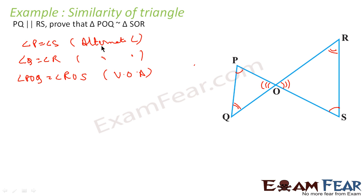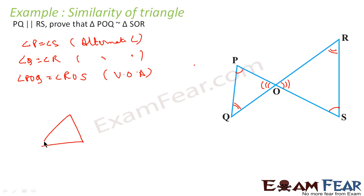So in this triangle, we have to prove that POQ is similar to SOR. That means we need to show P is equal to S, O is equal to O, and R is equal to Q. We need to prove POQ is similar to SOR. You may prove the angle correspondence like this — if you are asked POQ is similar to SOR, that means angle Q should correspond to angle S.